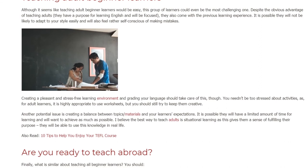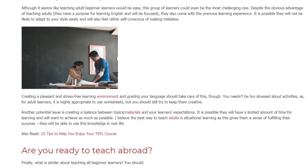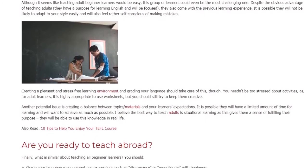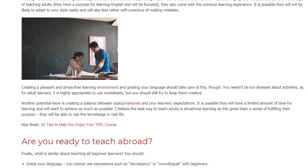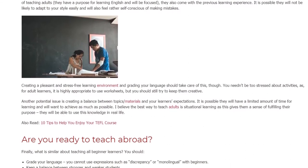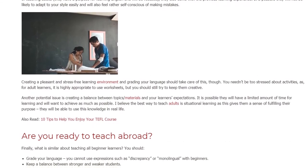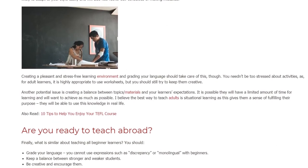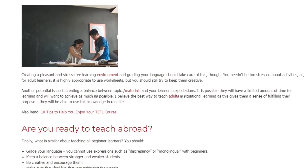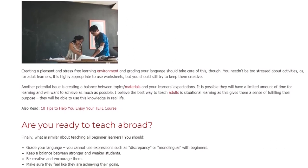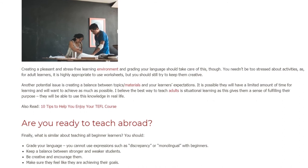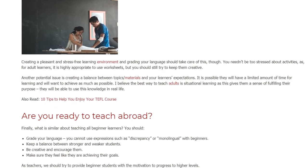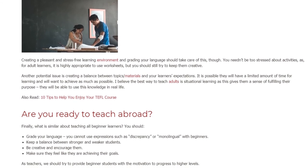Another potential issue is creating a balance between topics and your learners' expectations. It is possible they will have a limited amount of time for learning and will want to achieve as much as possible. I believe the best way to teach adults is situational learning, as this gives them a sense of fulfilling their purpose — they will be able to use this knowledge in real life.